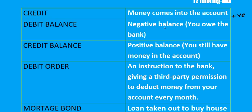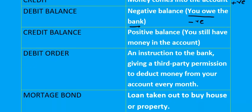The balance is recorded at the beginning or end of the financial period. If you have a negative balance, that means you owe the bank money — it is a debit balance. If you have a credit balance, the balance will be positive, meaning you still have money in the account.